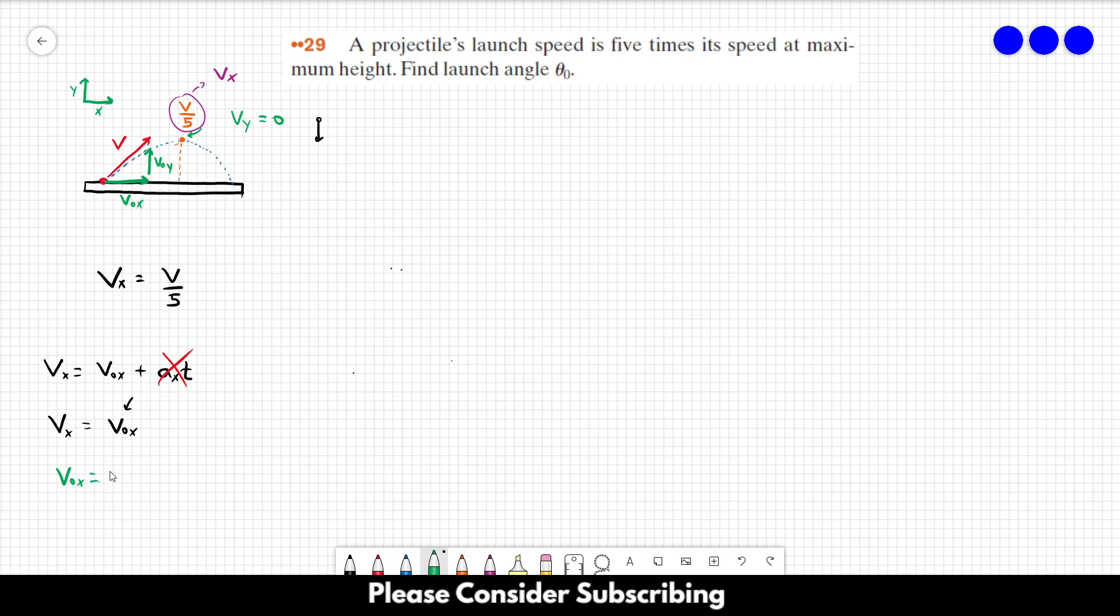VOX is equal to V times the cosine of the angle. So what we know here? We know that VX is equal to V cosine of the angle. Just replace over there. And we know that VX is equal to V over 5. So V over 5 is equal to V, the cosine of the angle.